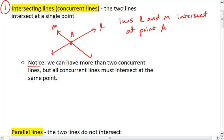Do take note that it is possible to have more than two concurrent lines. But for this to occur, all concurrent lines must intersect at the same point. So if we drew in a third line here, we'll name that line N.